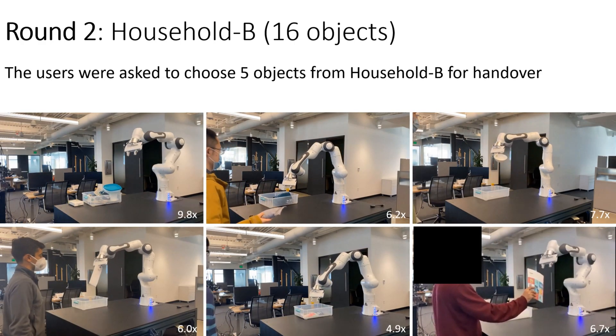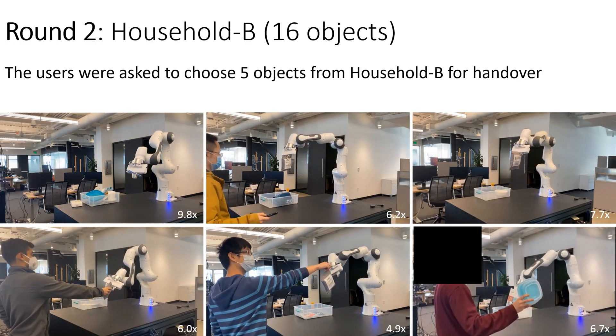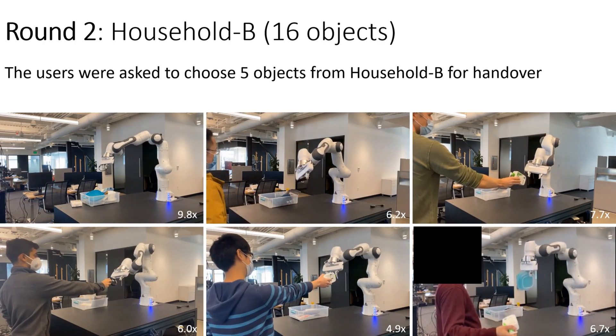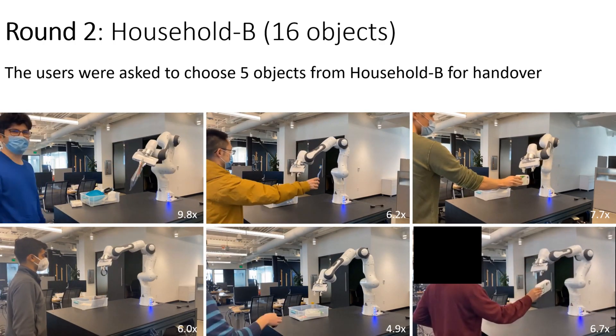In the second set, users were asked to choose five objects from household B, a large set of diverse objects. A wide range of objects was chosen and successfully handed over to the robot.